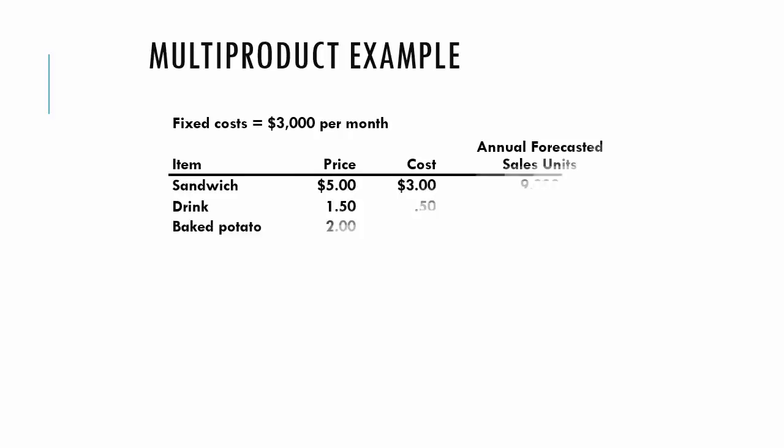This example is from the book. I suggest carefully reading through the example where you are selling sandwiches, drinks, and baked potatoes for different prices and different costs and annual forecasted sales, and also setting up a spreadsheet to keep track of your calculations.